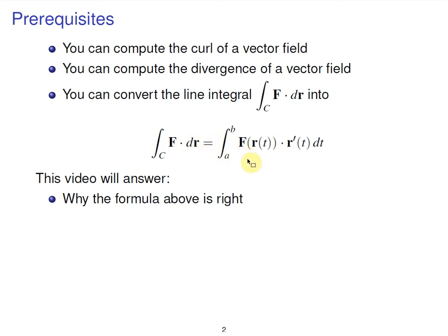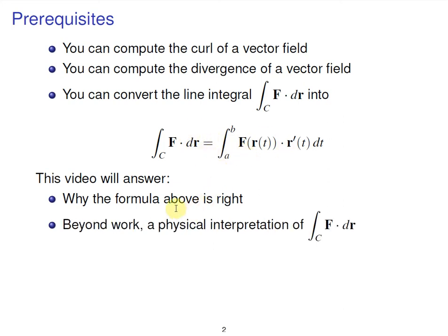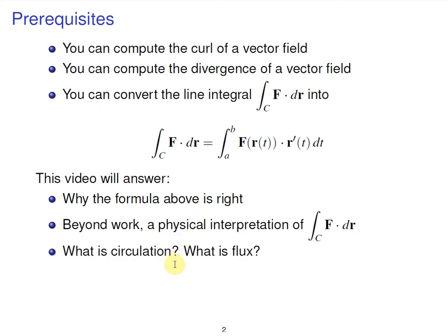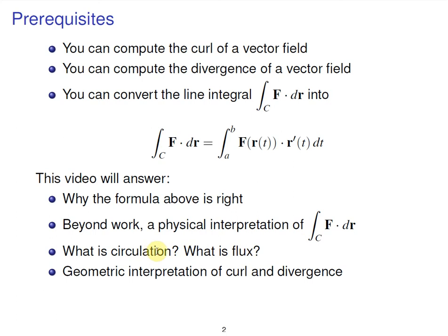In order to do that, we're going to provide some kind of explanation for what this means besides the standard explanation that if F is a vector field representing force, then the line integral — the scalar you get — would be work. As true as that is, it's nice to have another interpretation, and then these two things will go hand in hand. In addition, we'll introduce and try to explain what circulation and flux are, which happen to be different line integrals of vector fields.